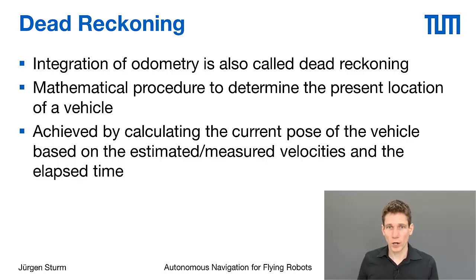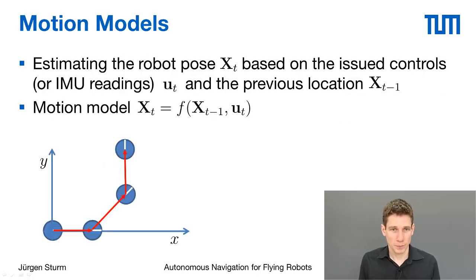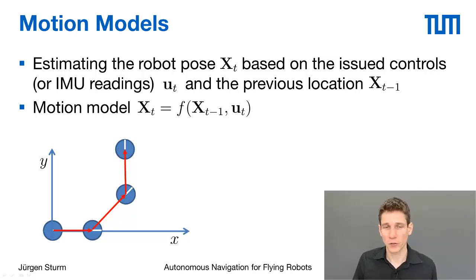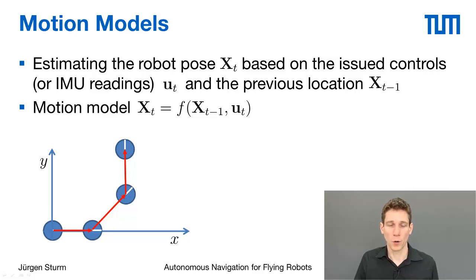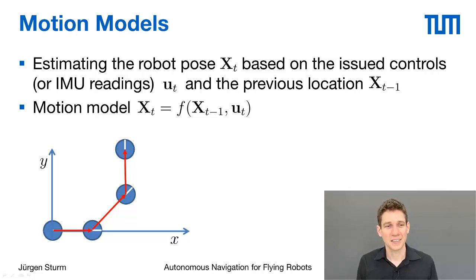Dead reckoning is achieved by using estimated or measured velocities and integrating over elapsed time. To do this, you typically need a motion model that translates control commands, IMU readings, or velocity sensor readings into robot motion between two time steps. Such a motion model takes as input the previous robot pose and the issued control command or odometry readings, and computes the new robot pose at time step t. IMU readings often arrive at 200 Hz, so frequent integration is needed to predict the current robot pose.